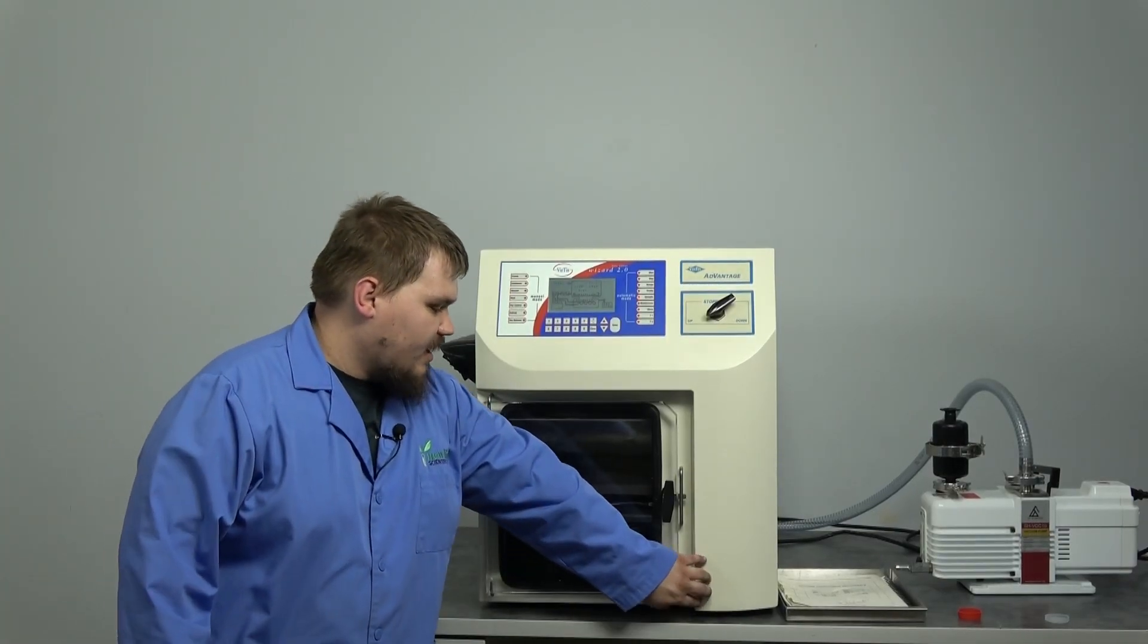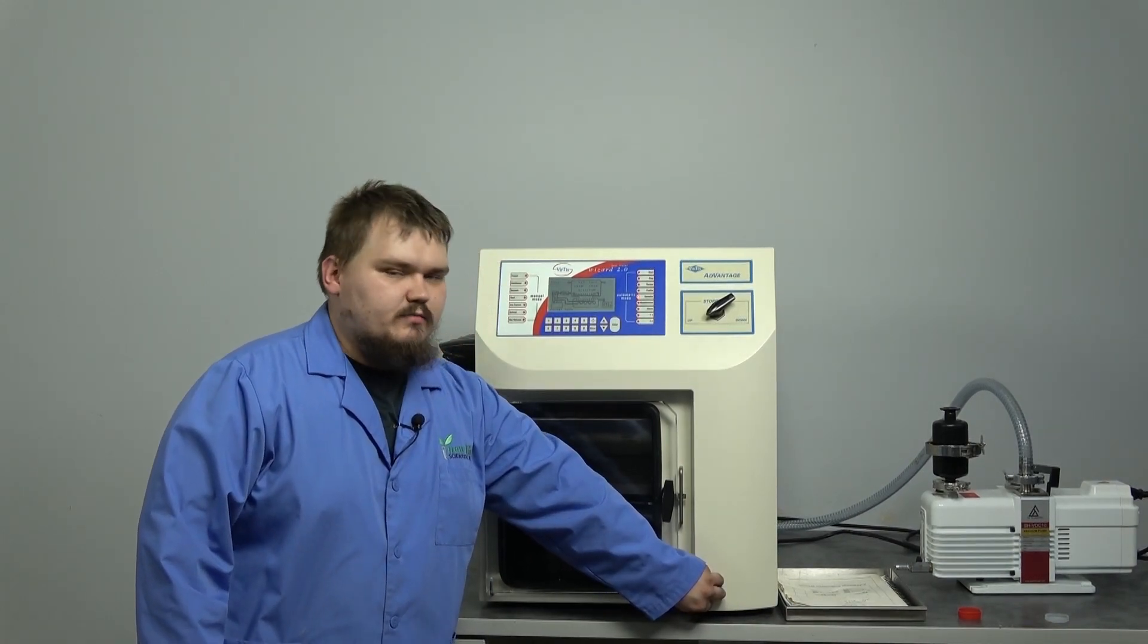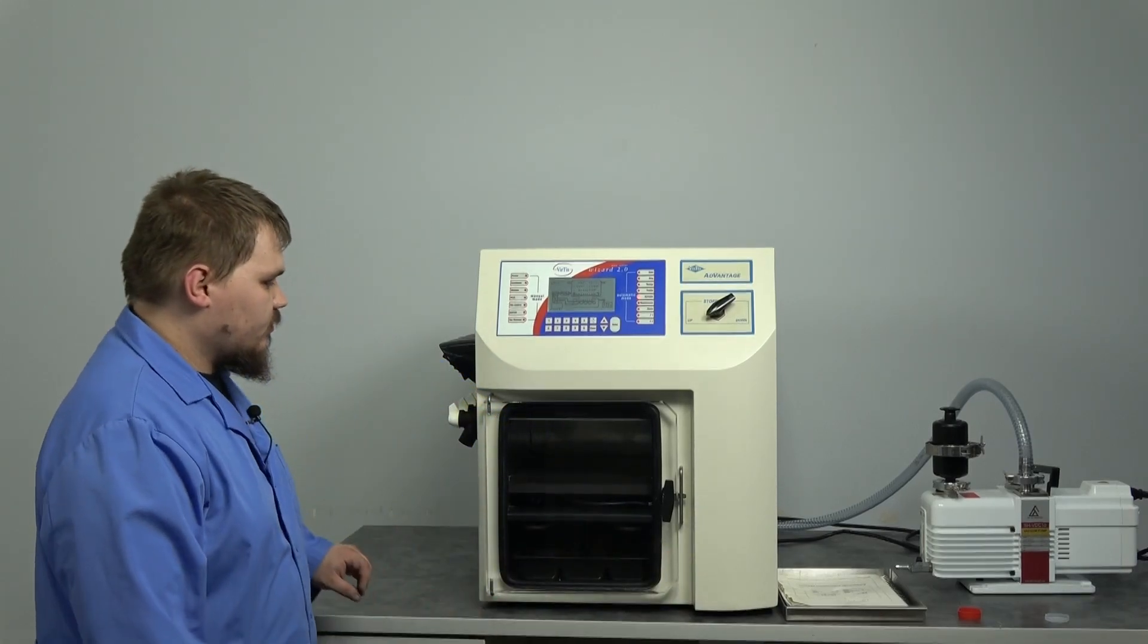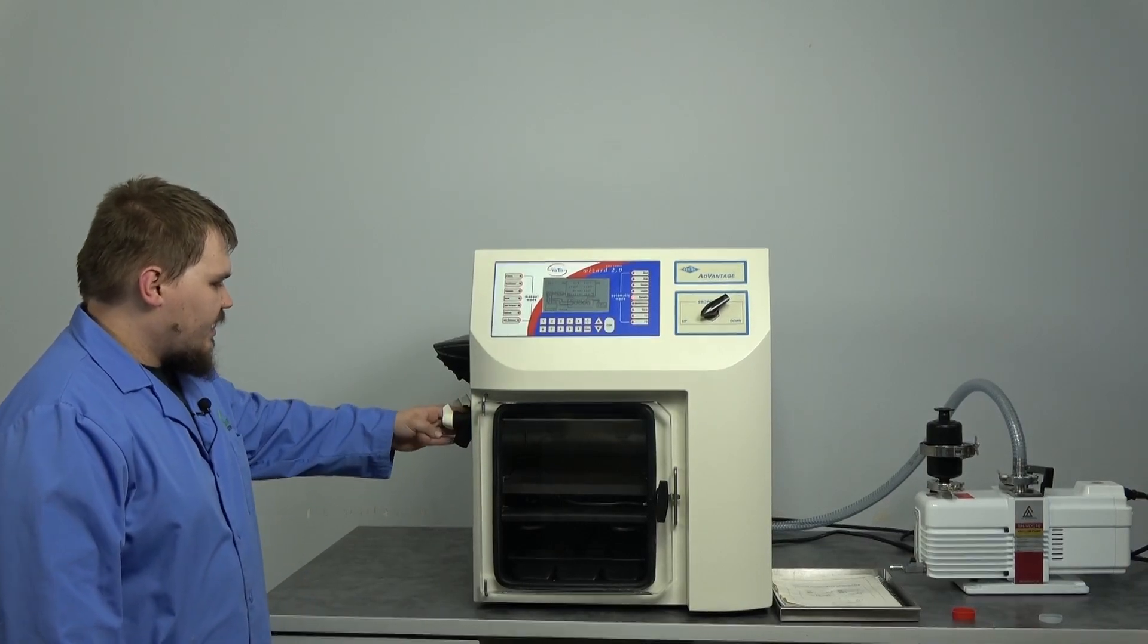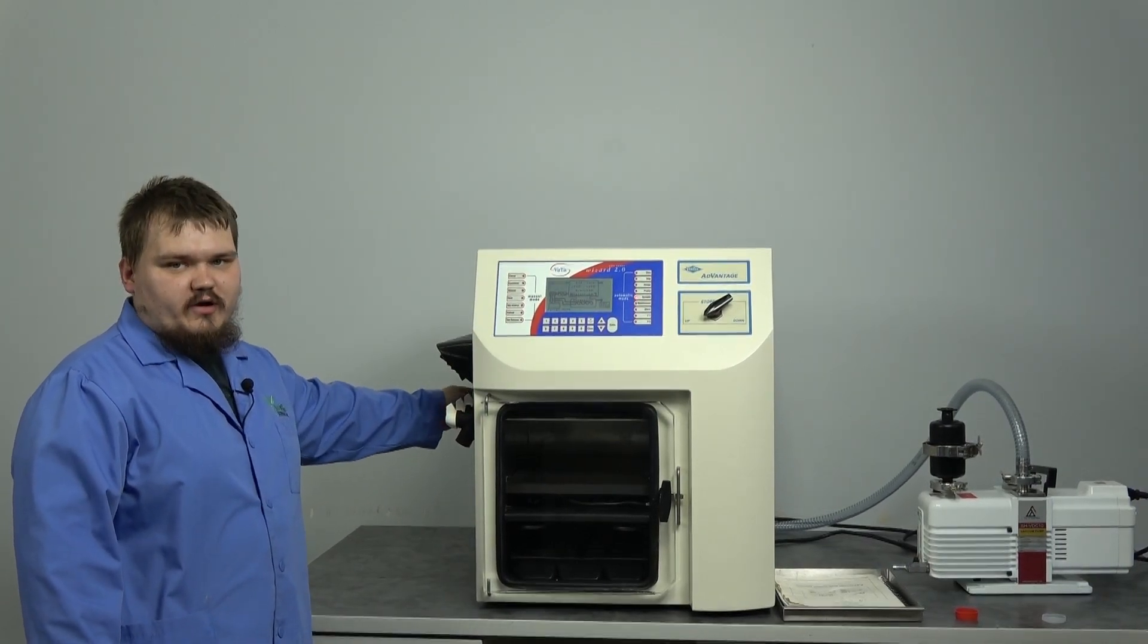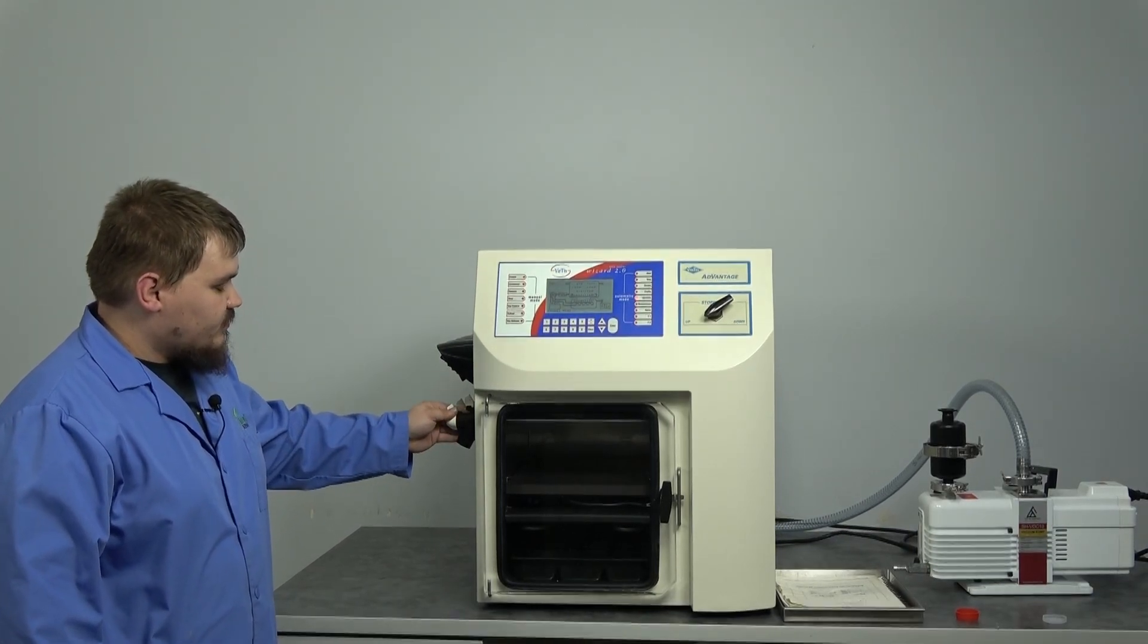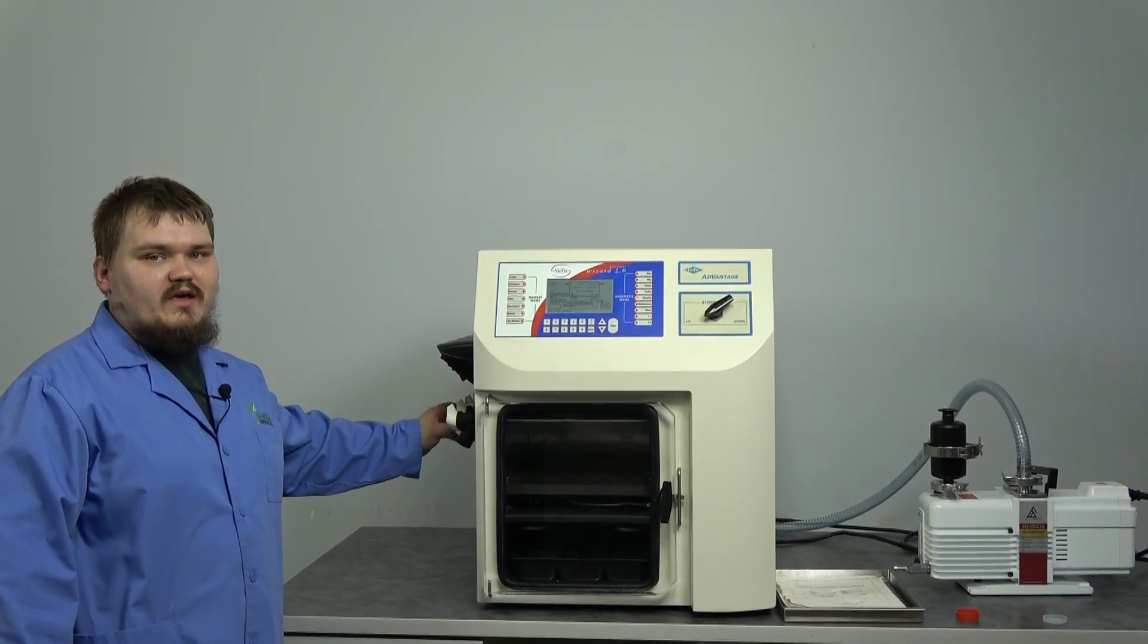Some of these machines did have a condenser drain that sat right here. This machine does not come with one at all, so we're not going to worry about that today. The machine does have four vacuum valves right here that we want to make sure are in the off position for later when we test the vacuum.